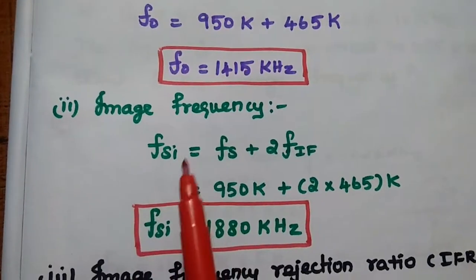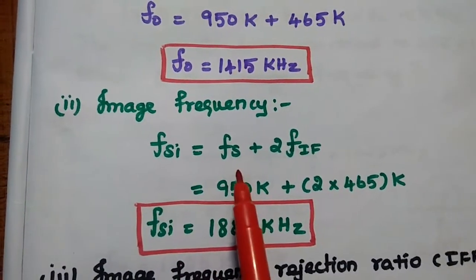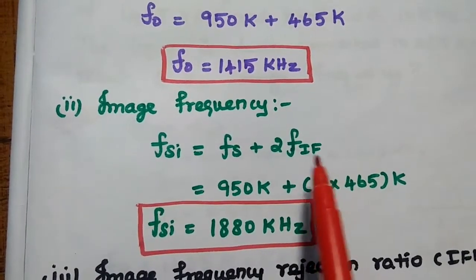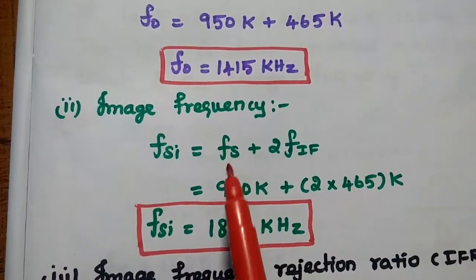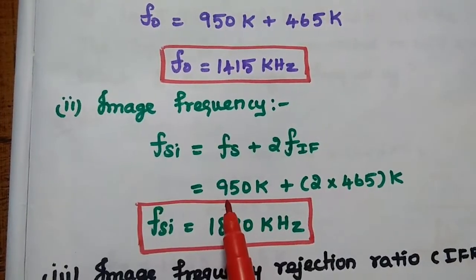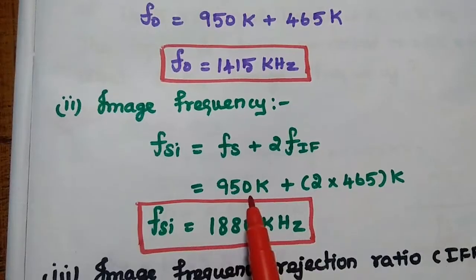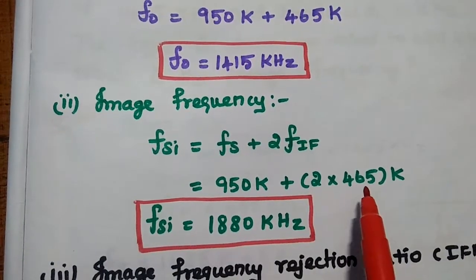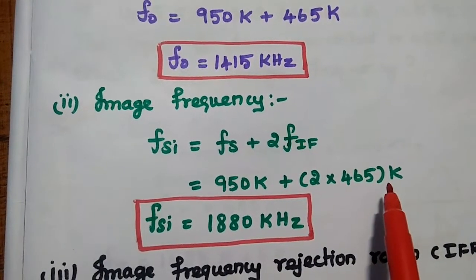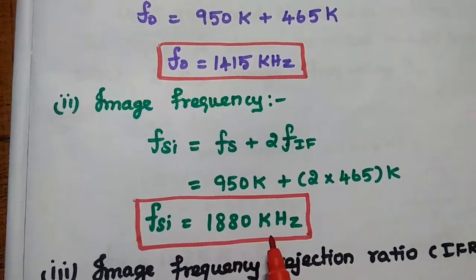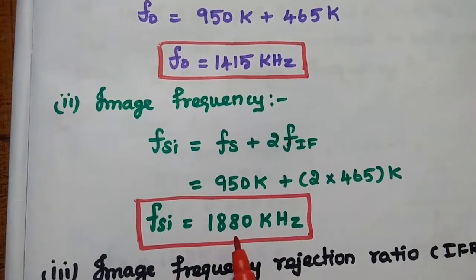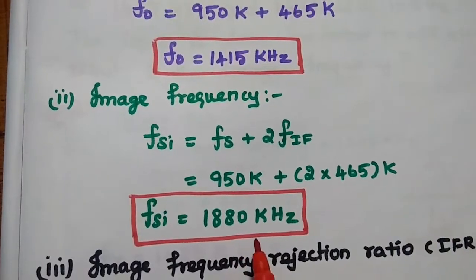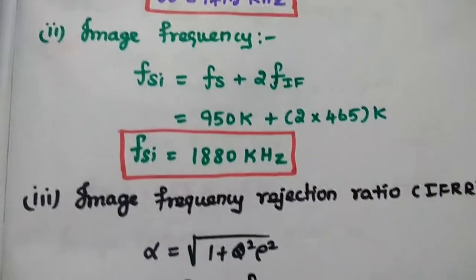Next, we find the image frequency. The formula is FSI equals FS plus 2 times the intermediate frequency. Here, FS is the signal frequency 950 kHz, plus 2 times 465, giving us an image frequency of 1880 kHz.